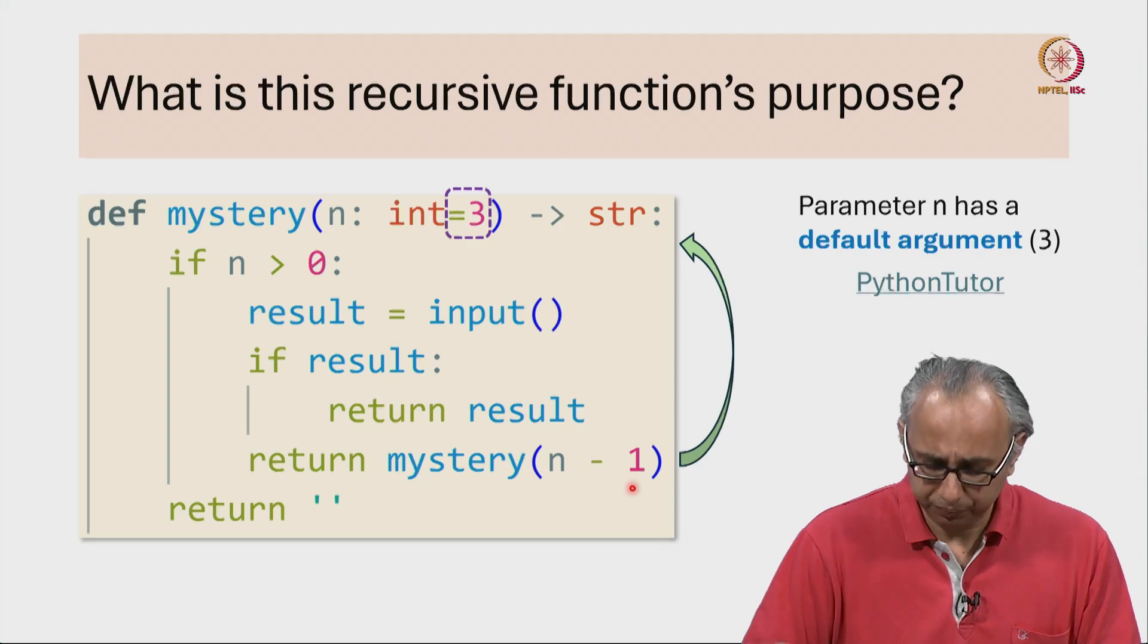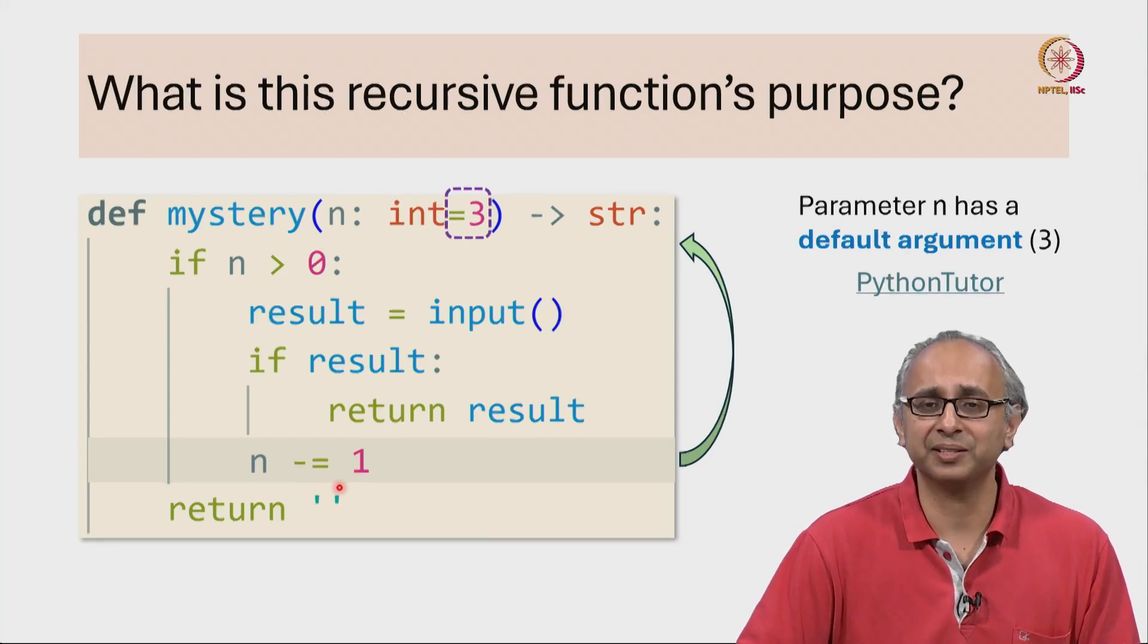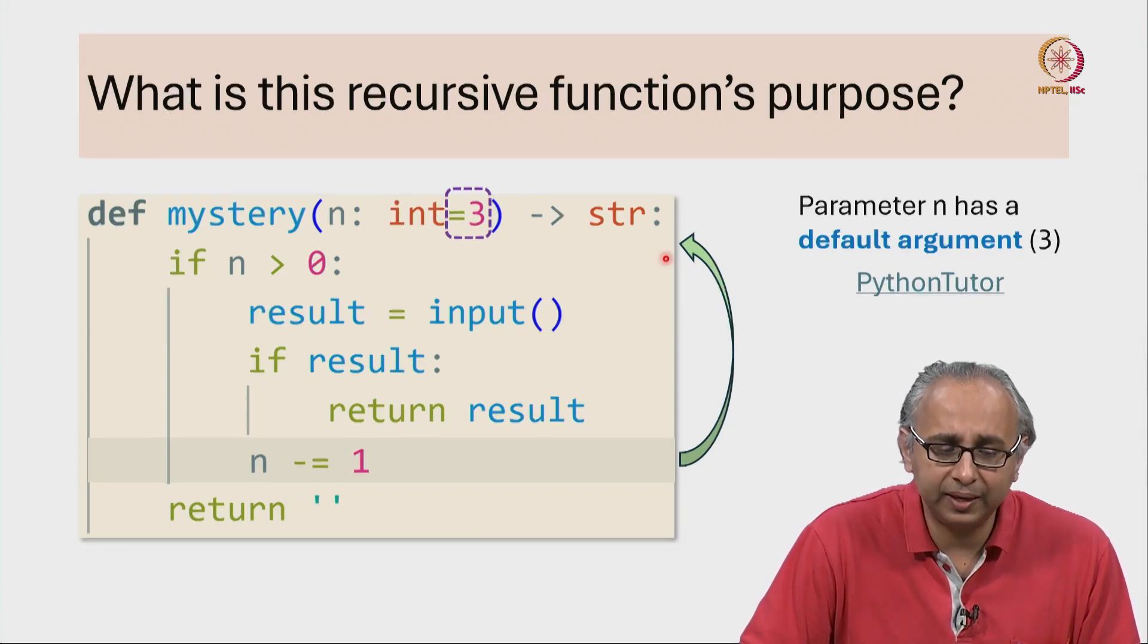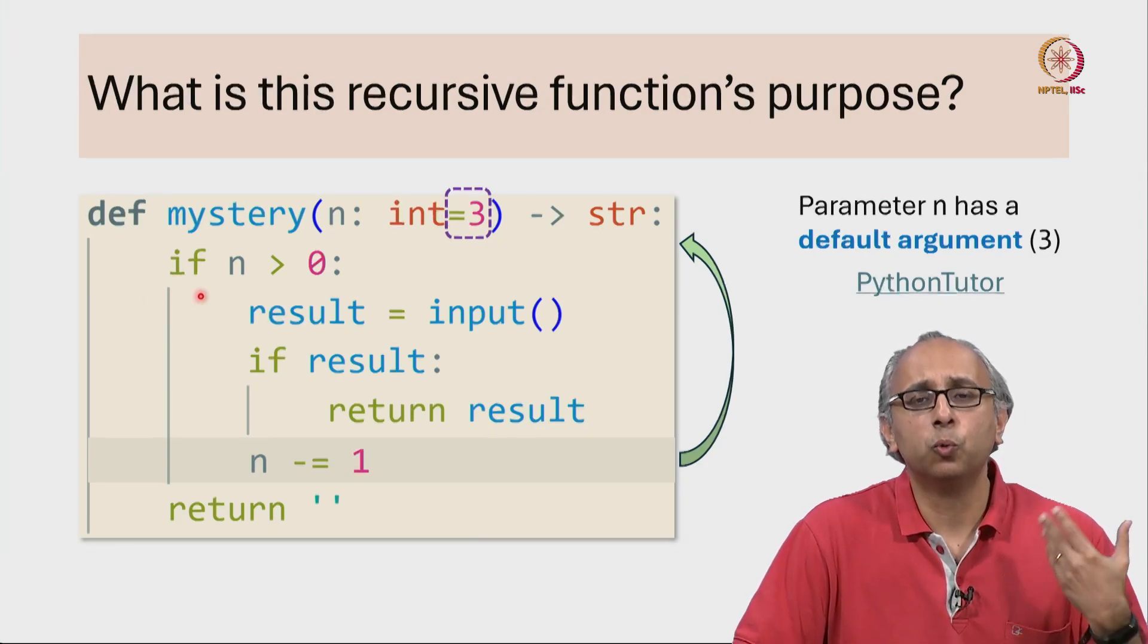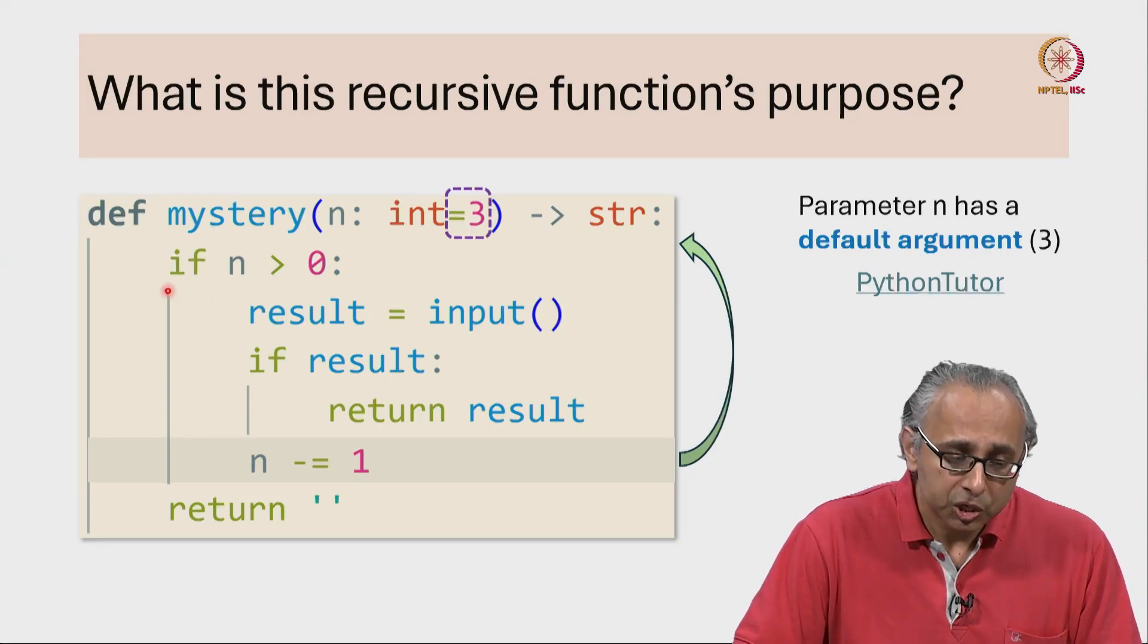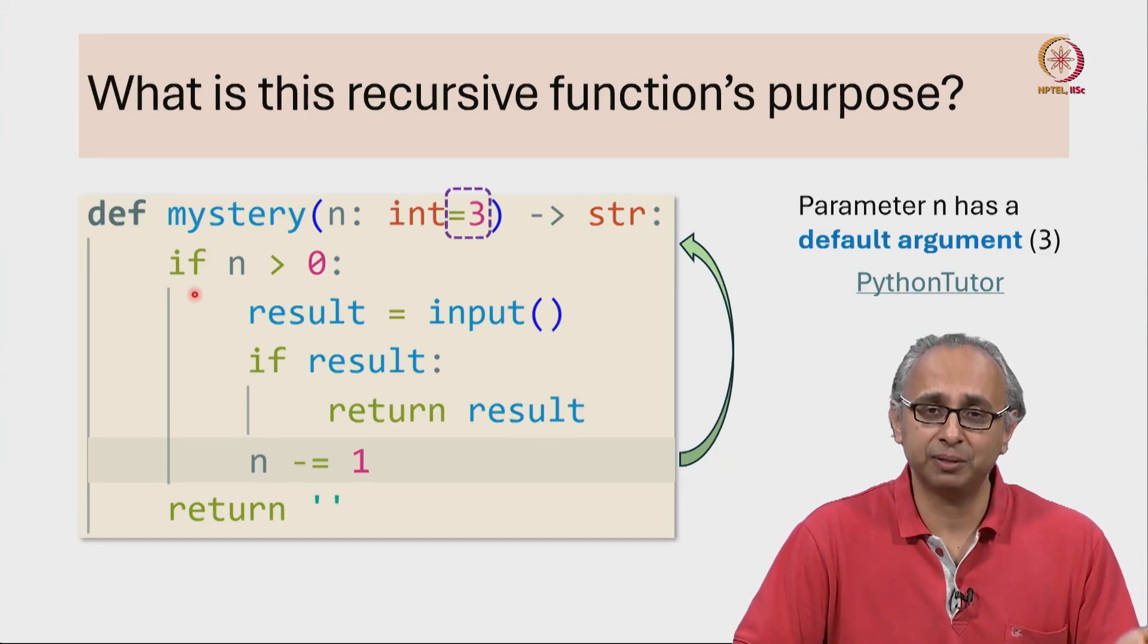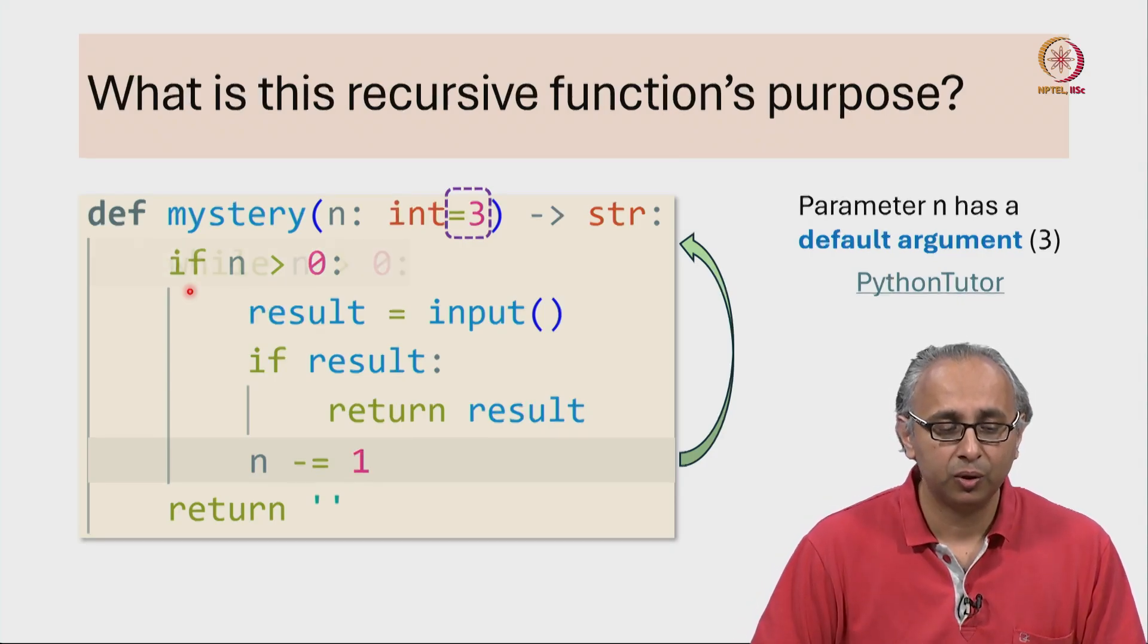We want to basically come back here but with the value n being 1 smaller. Well that's simple to do. We can just replace this return mystery n minus 1 with this statement n minus equals 1. And now we want a way to come back here and redo this if condition. We really don't want to waste resources by creating a brand new instance of the mystery function. So if we want to do an if condition many times, it's very simple to do this in Python. We just simply replace if with while.